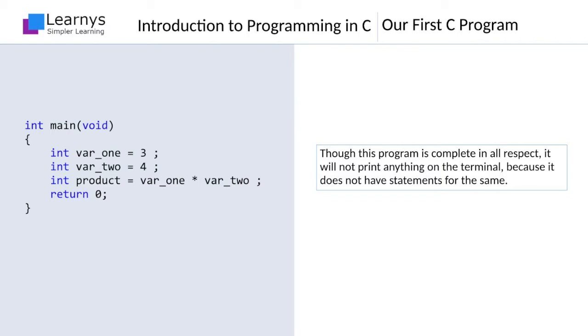If we want to display some output on the screen, we need to write statements for the same. If you are adventurous, you may prefer to write your own functions for displaying information, or you may borrow a function from a large collection of built-in functions that come pre-packaged with the C development environment. Let us learn to make use of built-in functions in our program to make it display the result of multiplication.